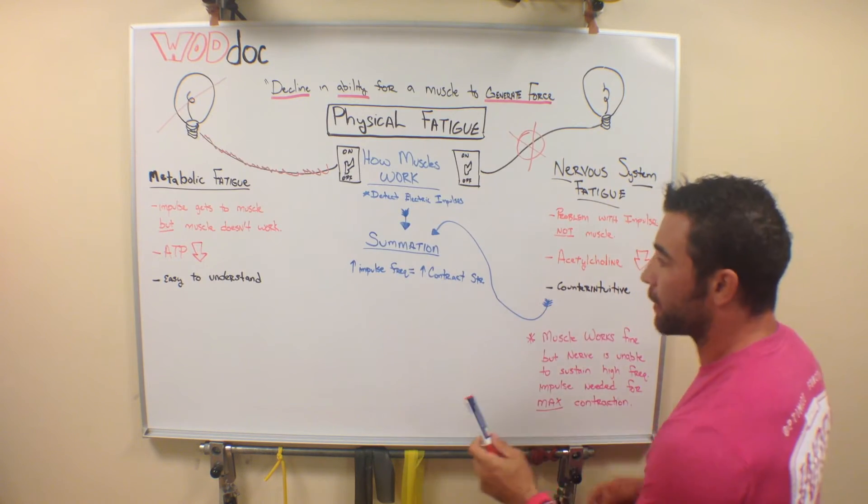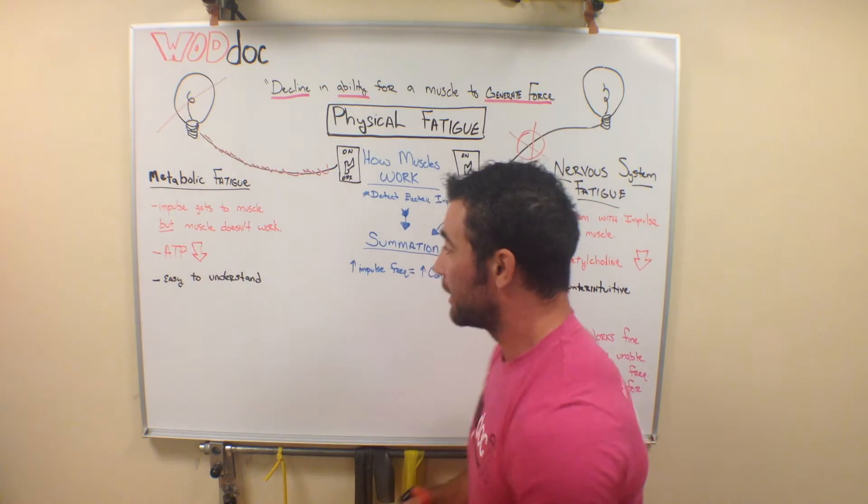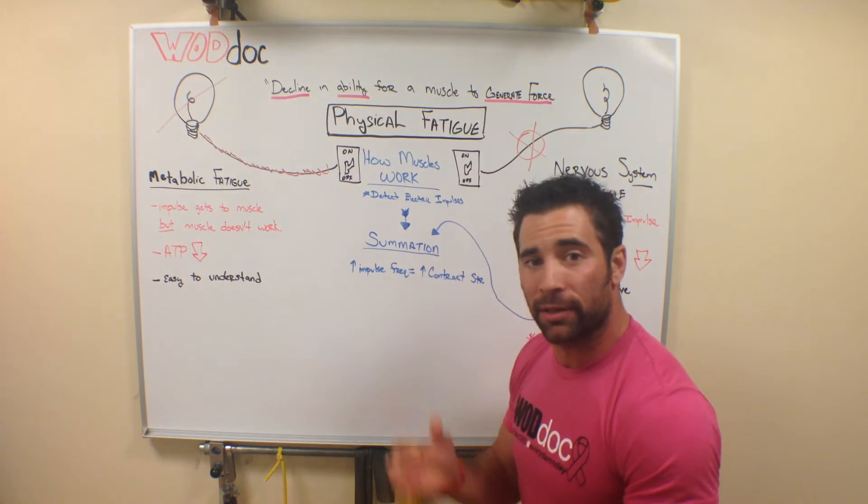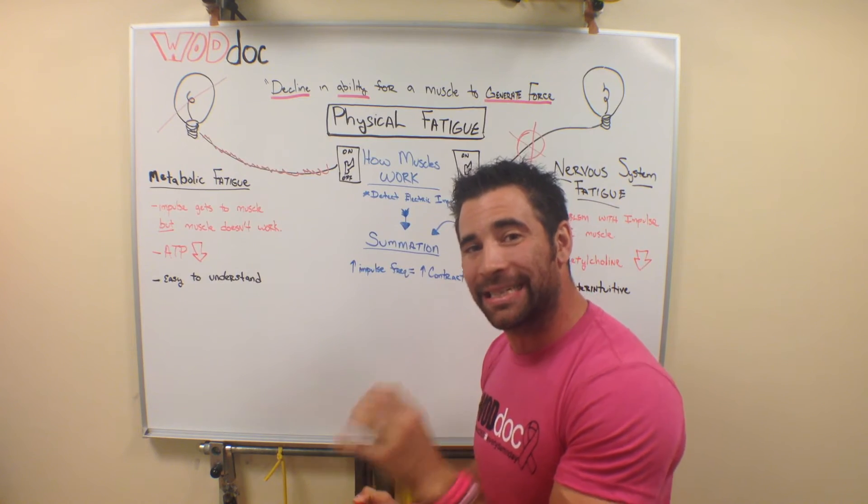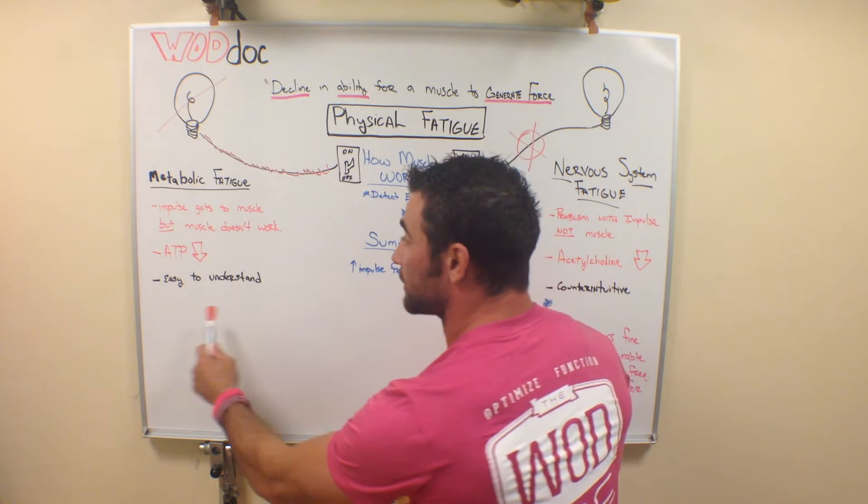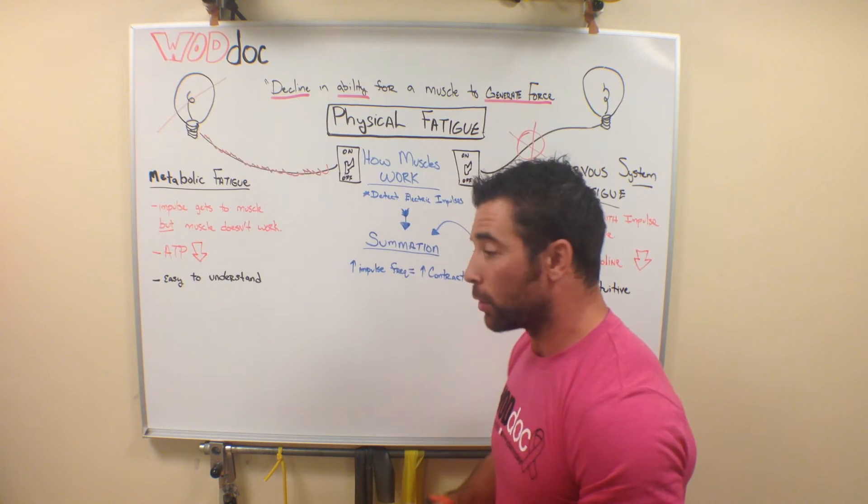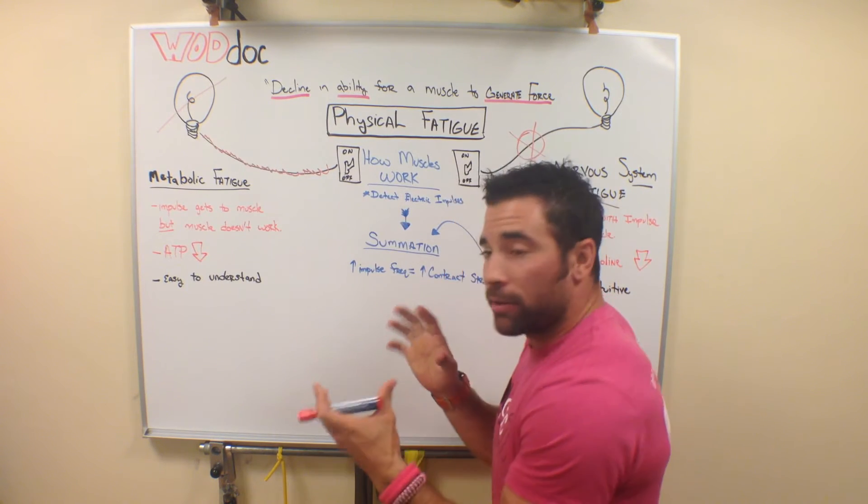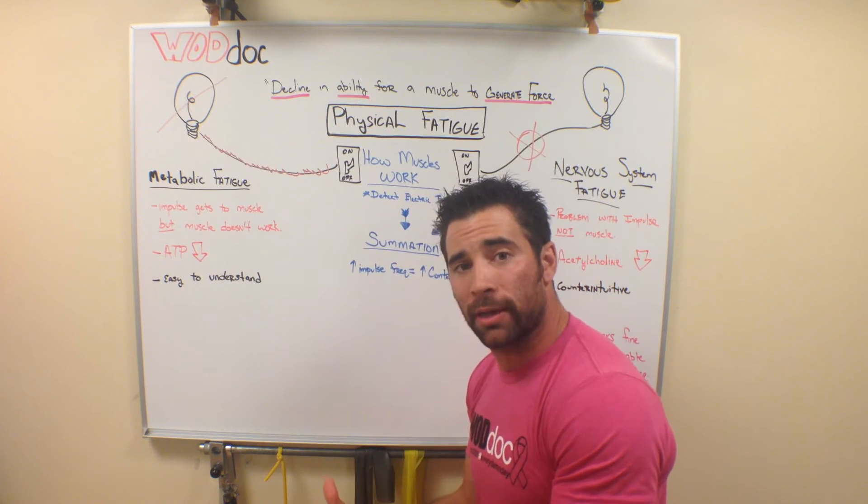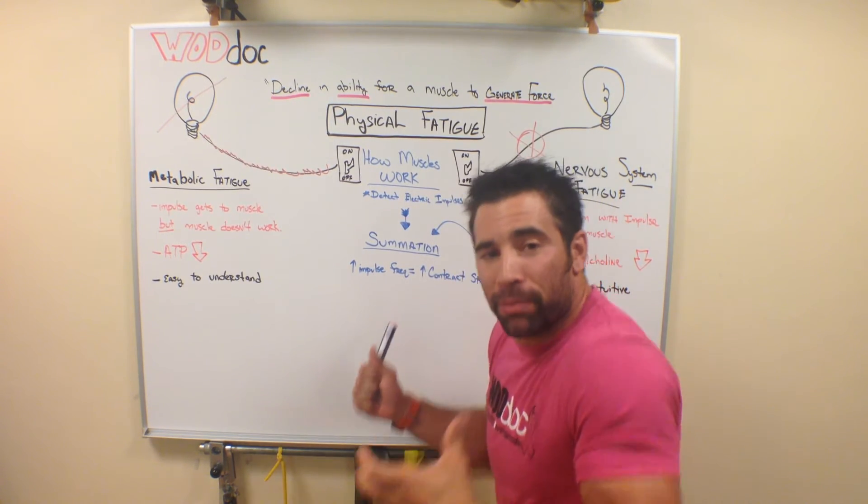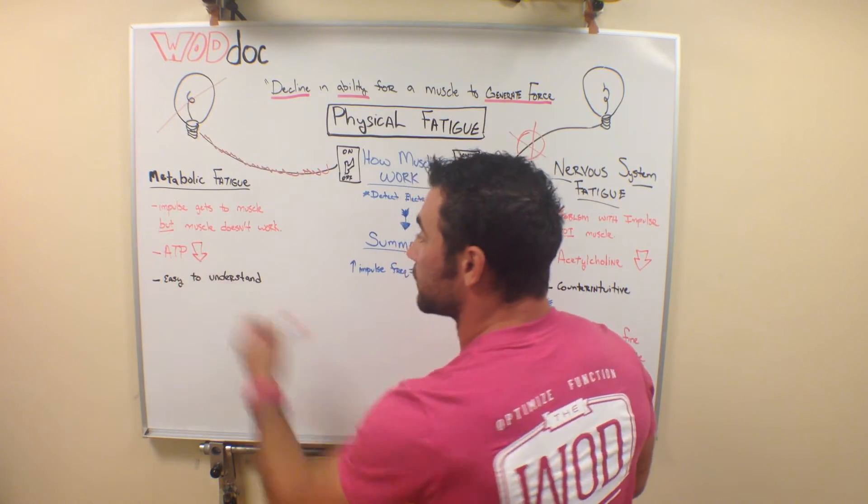Now, when we talk about metabolic fatigue, it's really easy to understand. You can understand that if my muscle is depleted from the nutrients it needs to contract, well, it makes sense that I can't contract it at a maximal effort. So the muscle itself will be achy. It'll be tired. It'll be sore. It'll feel like, I can't do it. This is easy to understand.